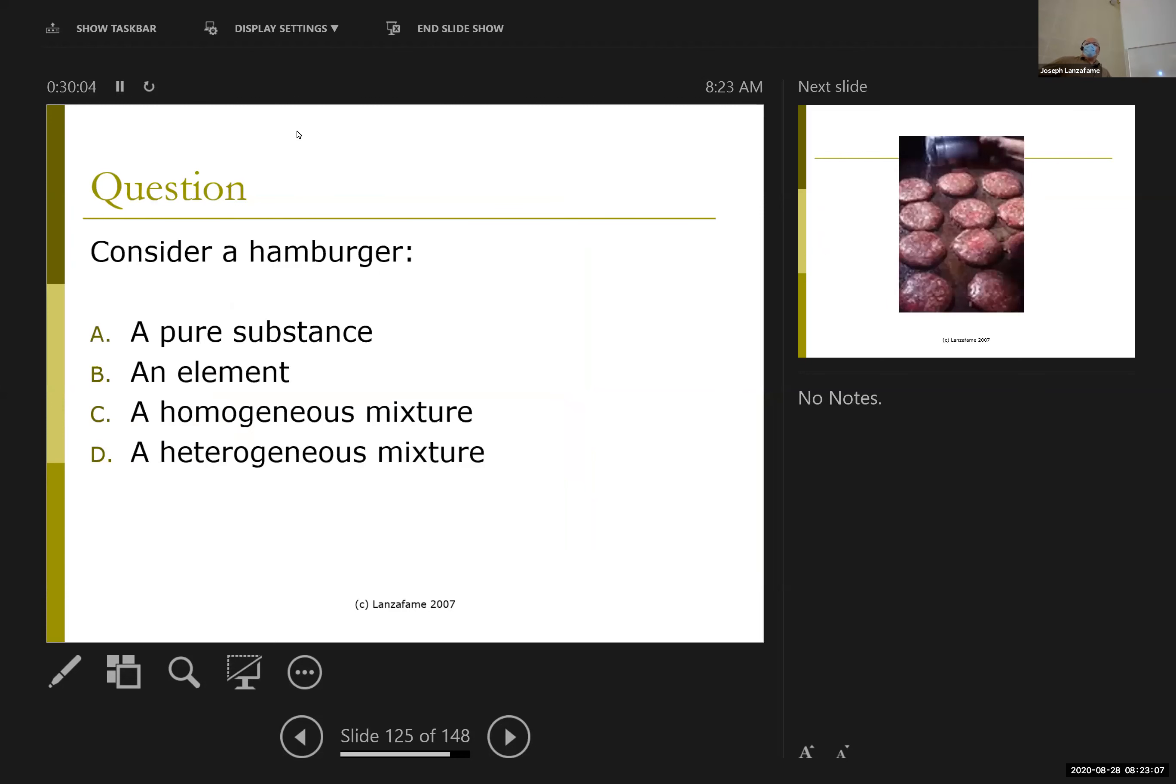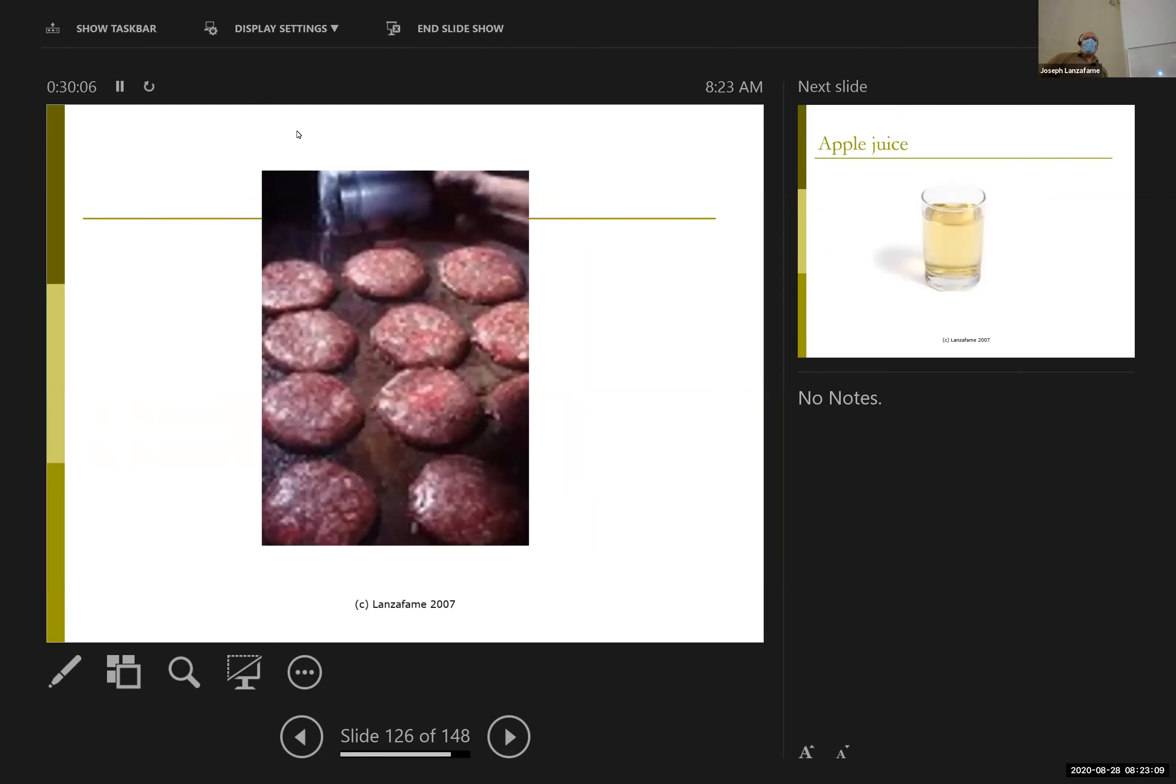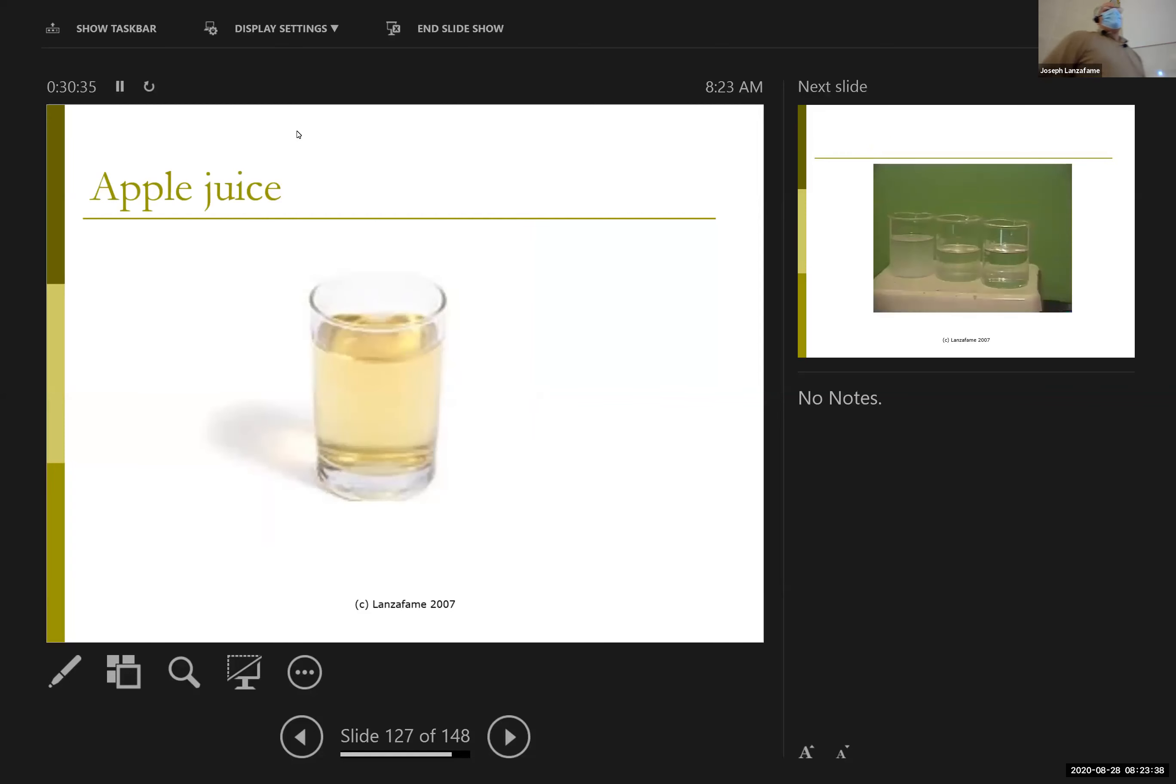Hamburger? Or, I don't know, how finely ground is it, and how obvious is the fat relative to the meat? Probably could argue it's heterogeneous. On the other hand, there should be equal parts fat to meat throughout the sample if it's finely ground. And so, I think that distinction can be hard to make.